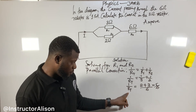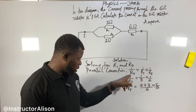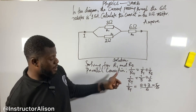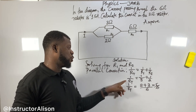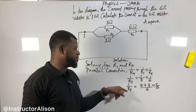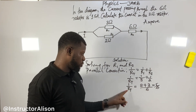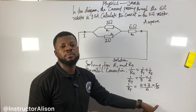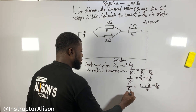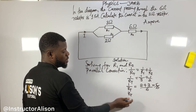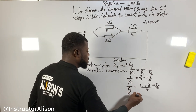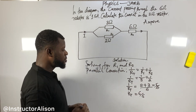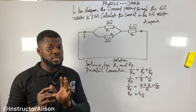Since one over R-total equals five over six, we flip both sides to find R-total. Flipping five over six gives six over five. So R-total equals six over five ohms.